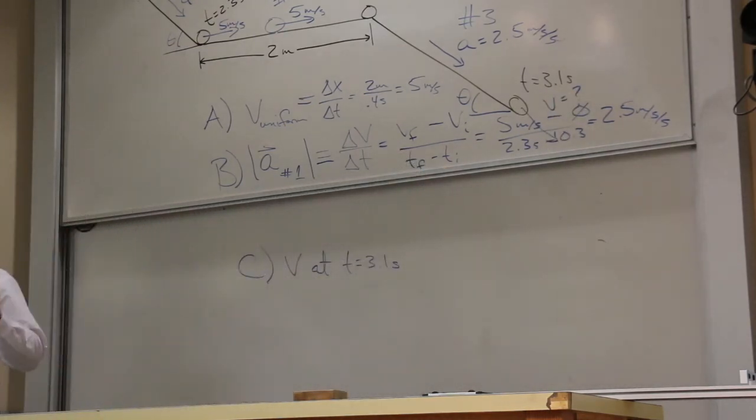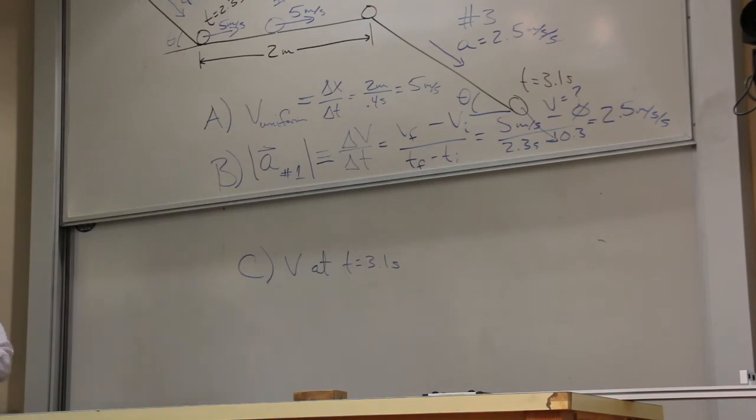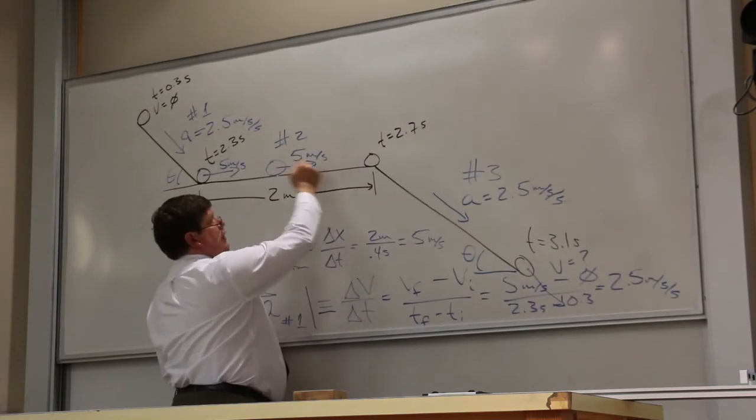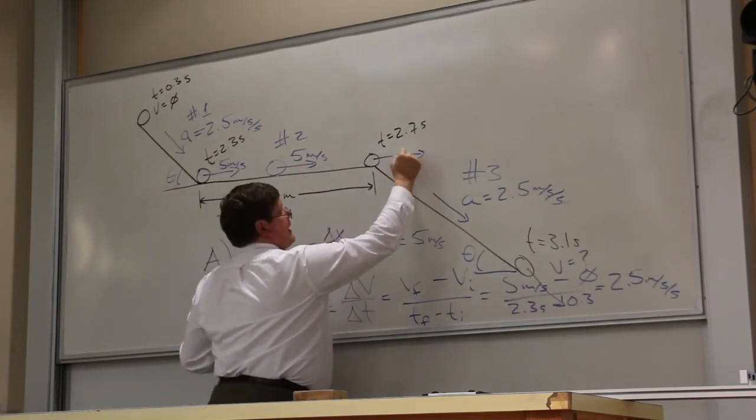Let me change the problem a little bit. Since this velocity on 2 is always 5, it's going to be 5 right here.